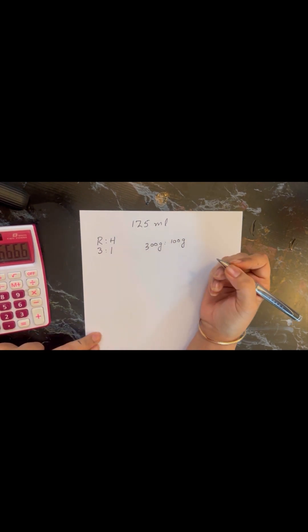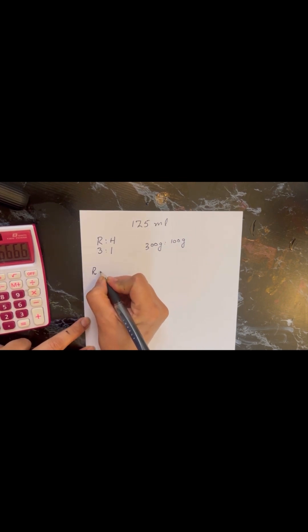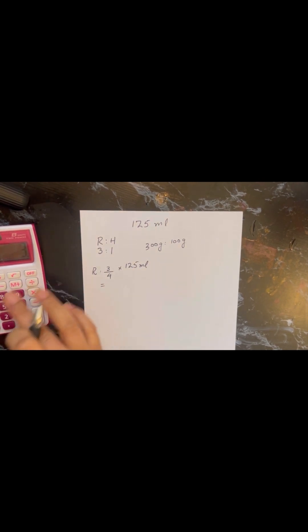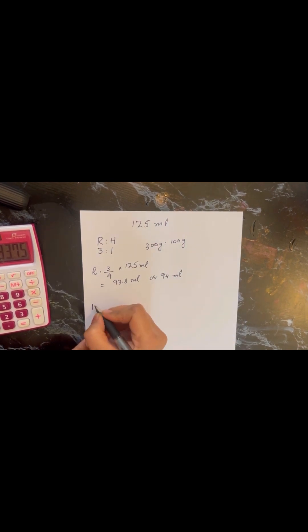So now, how you are going to find the resin out of 125 ml? To calculate the resin part, you will take 3 out of 4 times 125. So after doing the calculation the answer is going to be 93.8 and you can round it up and use it as 94 ml.